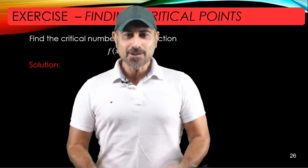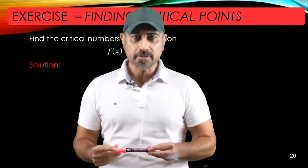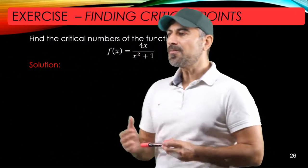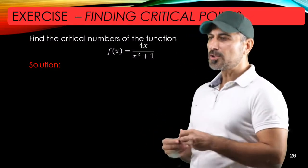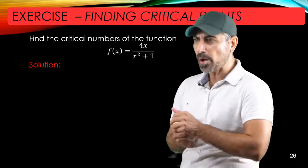Hello, welcome back. In this video we're going to go over an exercise where we're going to find the critical points of a given function. Here the function is a rational function which is the quotient of two different functions, 4x and x squared plus 1.